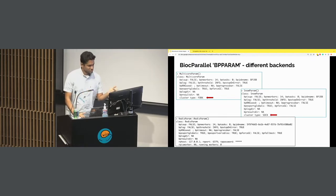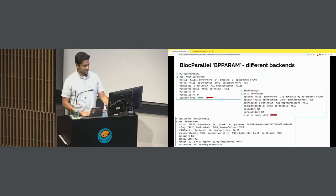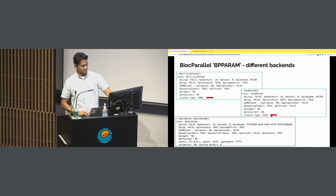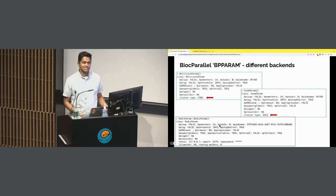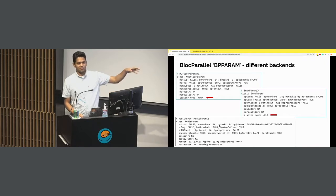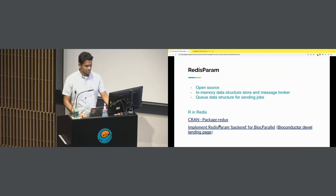I took screenshots from my local machine for each of these different backends. You can see that all of them report 14 possible workers, because I have a 16-core machine. The way BiocParallel gives you the number of workers is total minus two, so 16 minus 2 equals 14.